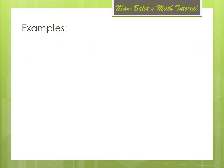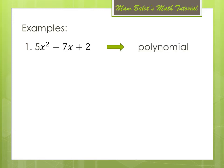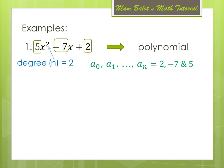Let's have some examples. Example number 1: 5x squared minus 7x plus 2. Is this a polynomial? Of course, because it has a degree of n which is equal to 2, and it has the coefficients a sub 0 up to a sub n which are 2, negative 7, and 5, which are real numbers.